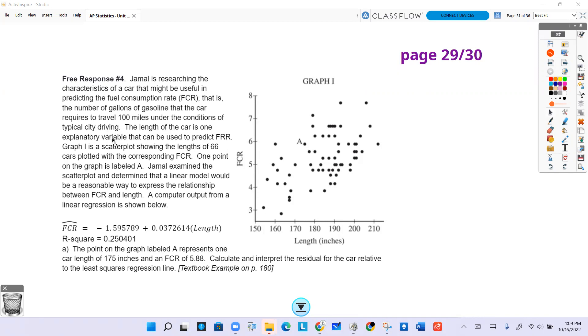The length of the car is one explanatory variable that can be used to predict FCR. Graph one is a scatter plot showing the lengths of 66 cars plotted along with the corresponding FCR. One point on the graph is labeled A.